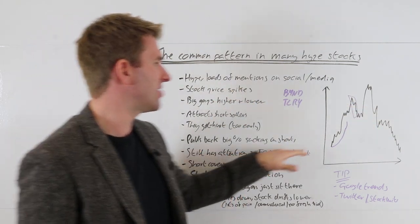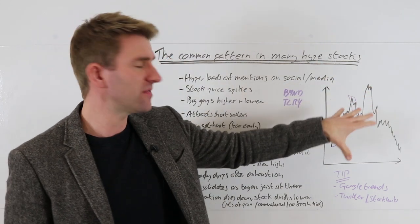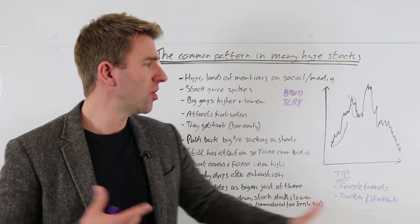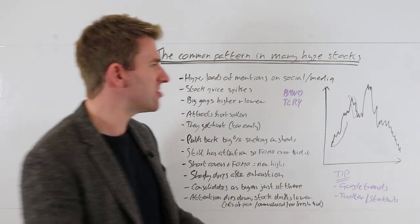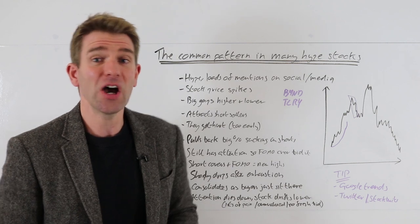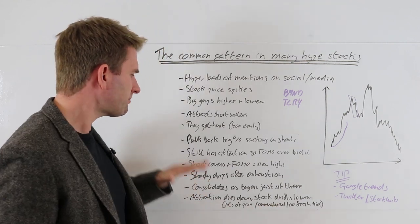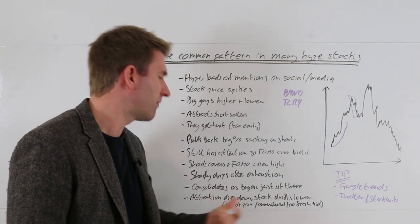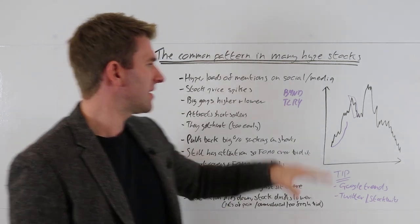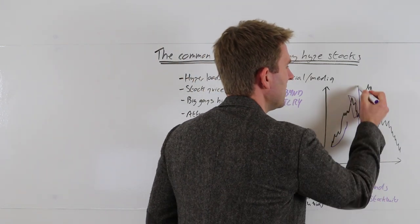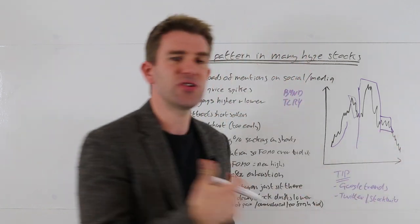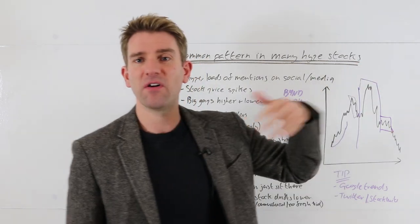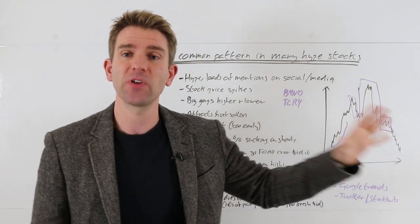You get all the FOMO guys in, all the short sellers getting hit here, getting spit out here, and then things start to get interesting because it still has attention in the media. A lot of FOMO crowd in, a lot of retail investors in, a lot of short sellers in that mix and combination. The low float and the low amount of liquidity available is causing these big moves still. Here it's really kind of choppy, vulnerable—you can get hurt both ways if I'm honest. You get this exhaustion move up to the upside, generally one day massive gap day and then a reversal, which often signifies the high on that, and then it consolidates.